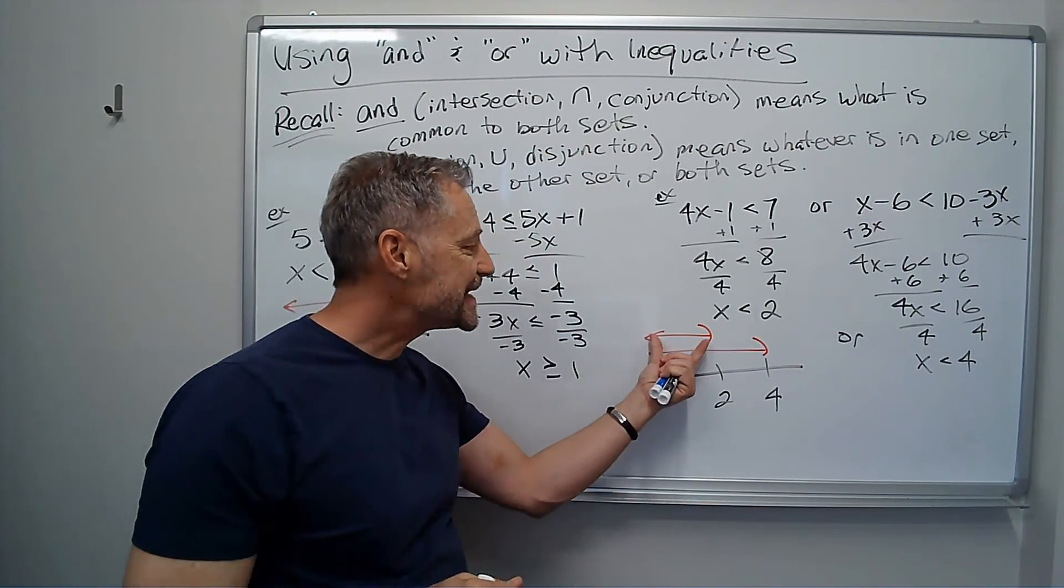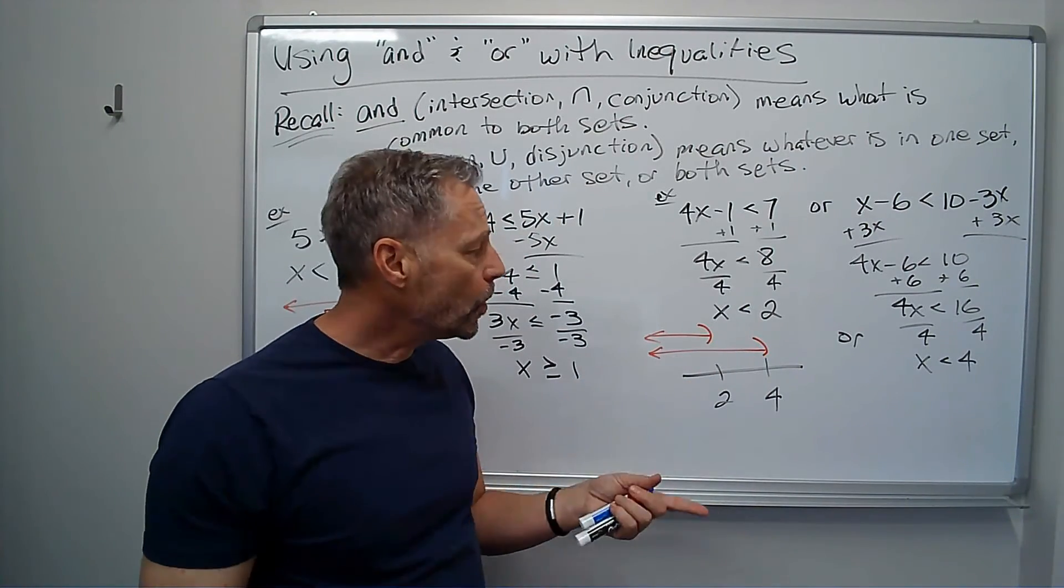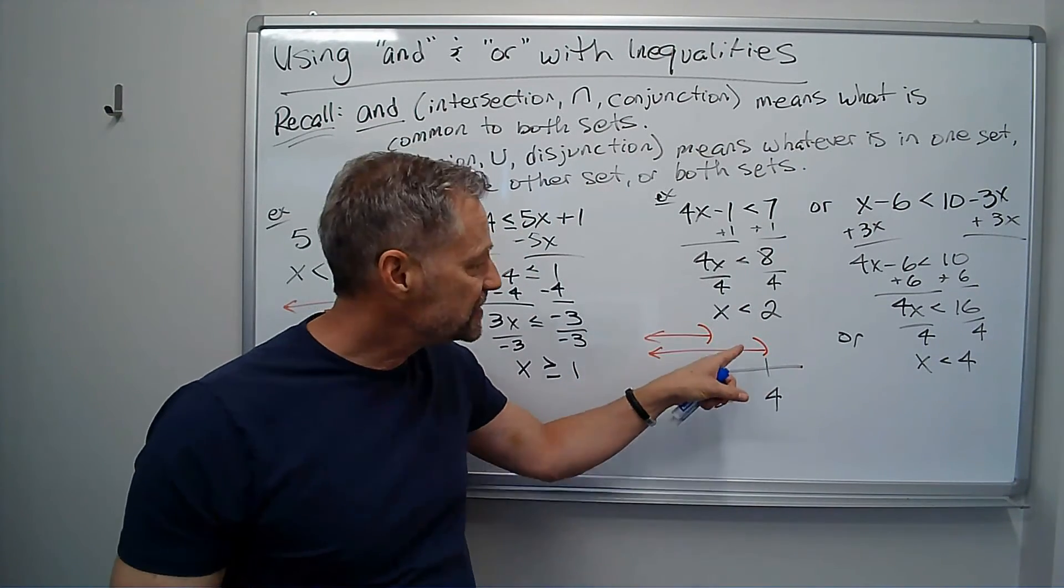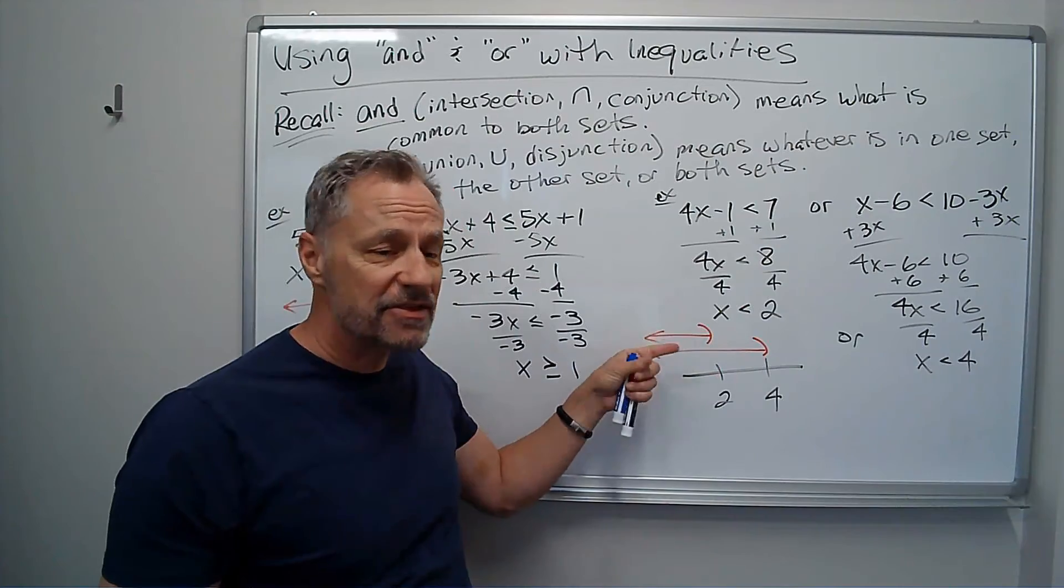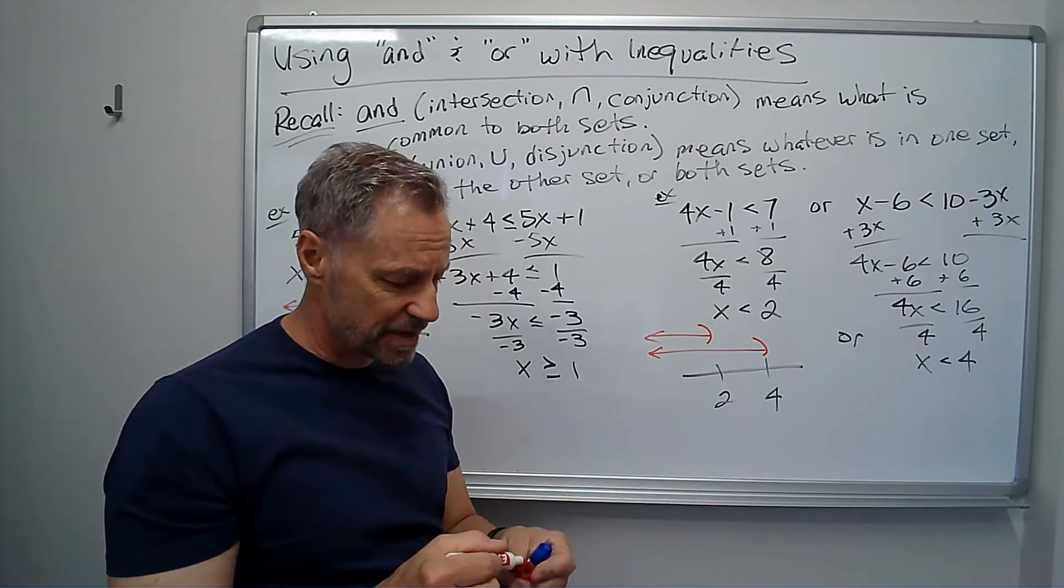Now, if this was an and, it would be this region right here where they overlap. An or, remember, we get to pick if it's in one set, or if it's in the other set, or if it's in both. So anything we see up there, we get to keep.